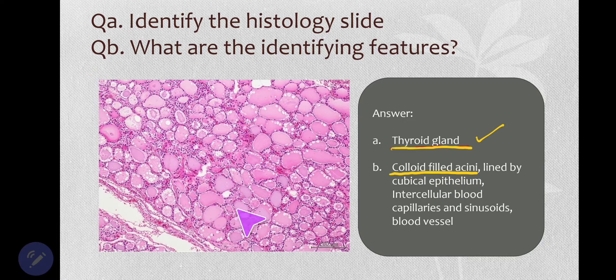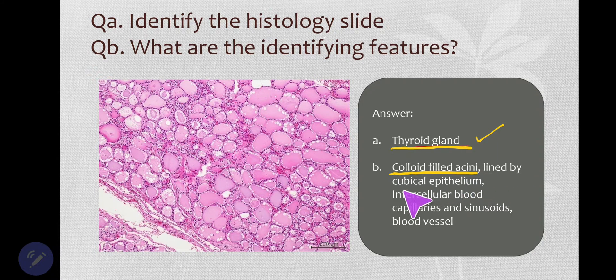Another feature is that these acini are lined by cuboidal epithelium — most of them are cuboidal — except when in an active secretory phase, when they become columnar.